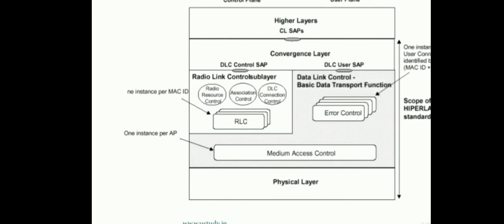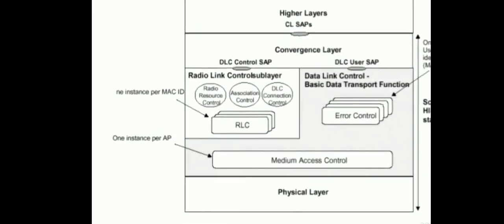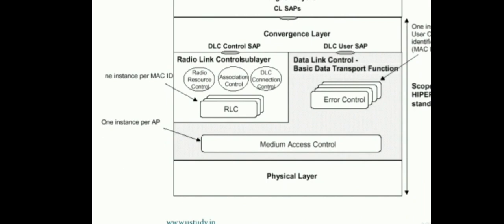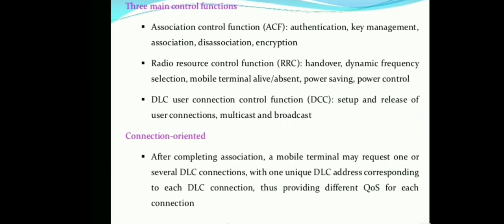Under the DLC layer, the Radio Link Control (RLC) sublayer is divided into three modules: Radio Resource Control, Association Control, and DLC Connection Control. On the user side, the Data Link Control connects to a Basic Data Transport function with error control. After connecting the DLC control and user system applications, the Medium Access Control (MAC) layer handles data transmission before passing it to the physical layer.